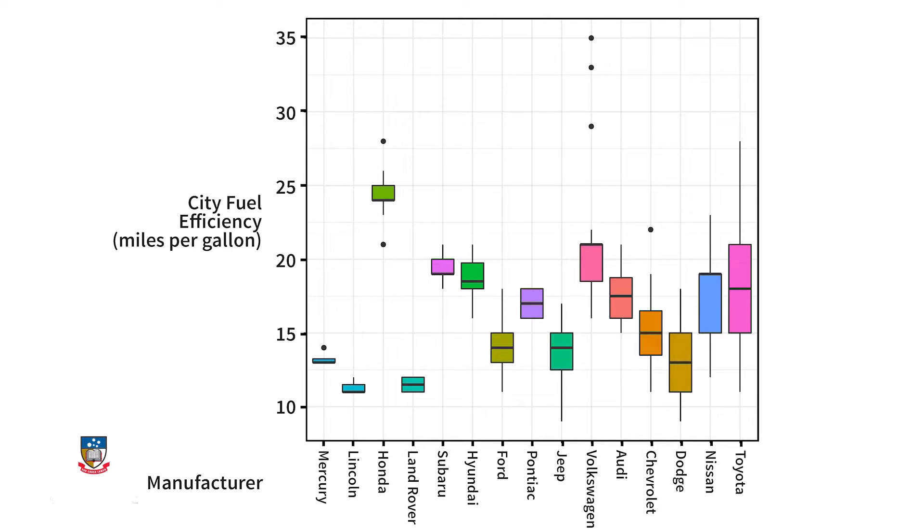On to spread. The height of the colored rectangle in a box plot is the interquartile range, which is a measure of spread. It's defined as the difference between the first and third quartiles — we talked about these in section one. Here are the box plots ordered by interquartile range. We can see that Toyota has the largest, and Mercury has the smallest.